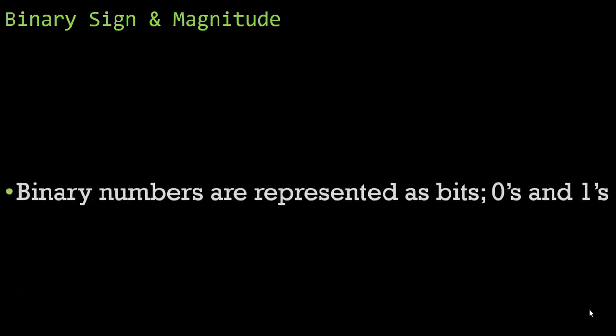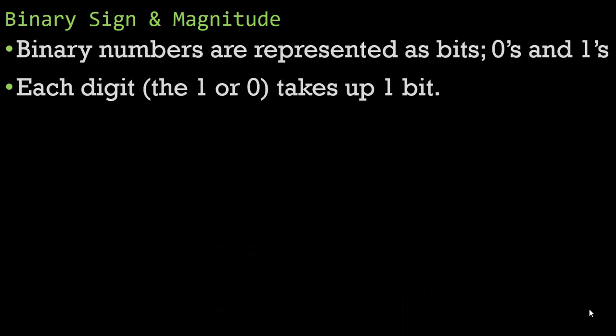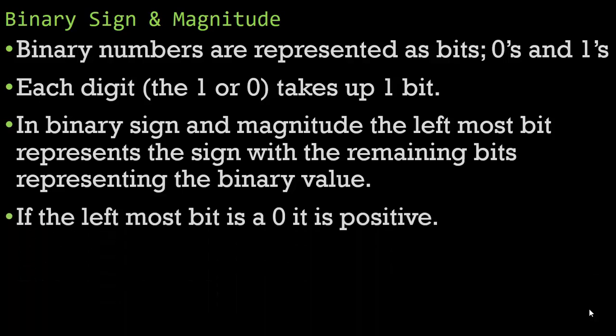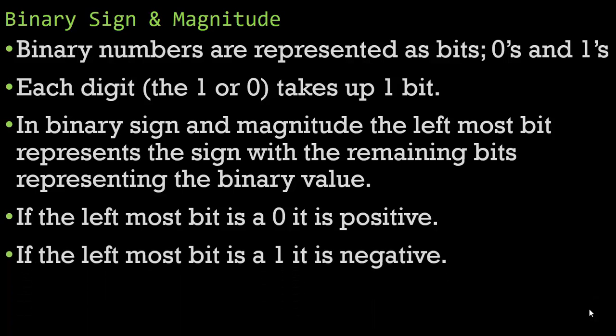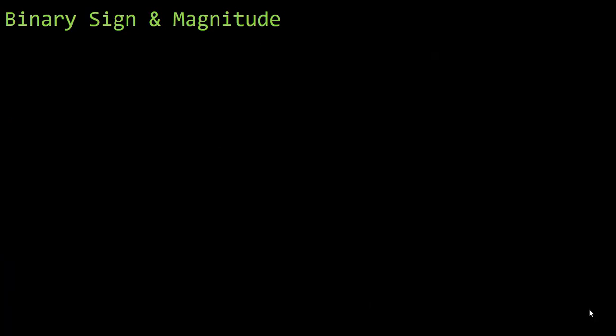Binary numbers are represented as bits, zeros and ones. Each digit, the one or the zero, takes up one bit of space. Now in binary sign and magnitude, the leftmost bit represents the sign with the remaining bits representing the binary value. So if the leftmost bit is a zero, we know we're dealing with a positive number. If the leftmost bit is a one, we know we're dealing with a negative number.